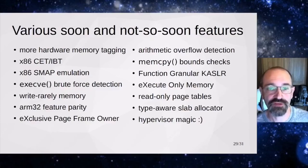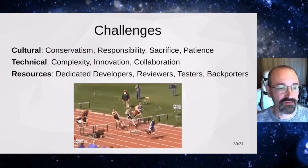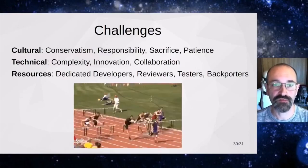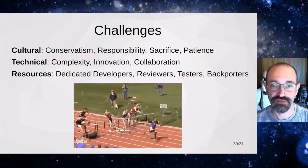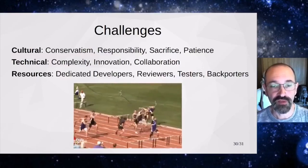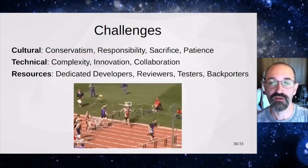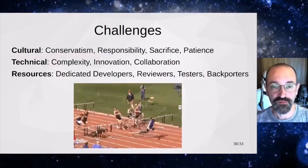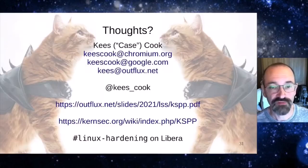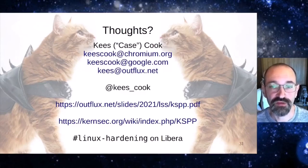We've still got a lot of challenges. There's a lot of conservatism in the kernel — reluctance to change stuff — but I think that gets better with more testing and kernel CI. We need to take responsibility for the APIs and language features that make the kernel unstable under attack. We've got to sacrifice our time and be patient with each other. As far as resources: more developers, more reviewers, more testers, more backporters — all of this is needed. If you have any thoughts, please email me or use Twitter, I'm on that IRC channel. You can see the slides and join the project more directly. I hope you've enjoyed the presentation. See you next time. Bye.